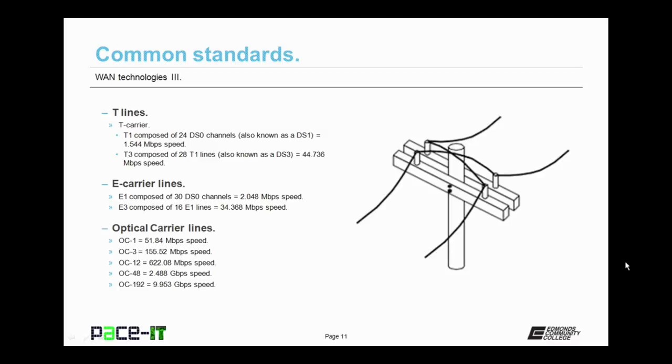For OC lines, we have the OC1. It's capable of 51.84 megabits per second in speed. Then there is the OC3, which gives you up to 155.52 megabits per second speed. It's becoming more common now to see OC12s. With those, you get up to 622.08 megabits per second.